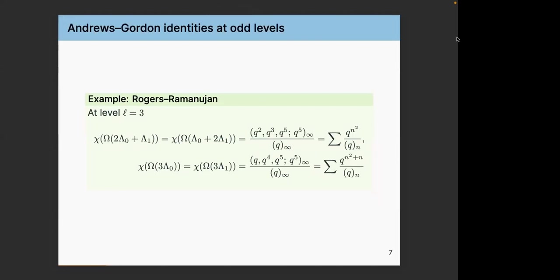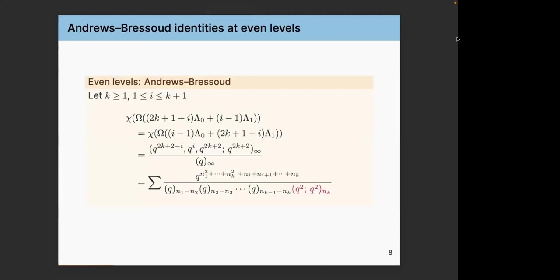The most famous identities in this family are the Rogers-Ramanujan identities, which reside at level 3. Lepowsky and Wilson built bases for these modules and showed that these bases correspond to the sum side. At even levels, you have a similar story — the same anatomy: quadratic form, linear deformation, Pochhammers — but the terminus has changed. The point is we want to play this game for all Lie algebras if we can, but we are only at the stage of SL3-hat. Isolated results exist for other Lie algebras, but such beautiful infinite families are not known, to the best of my knowledge, for any other algebra.